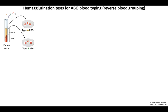Let's jump right into learning about some new tests today, starting with something called a hemagglutination assay, which is used for ABO blood typing. This is a type of serological test, or one where you measure qualities of soluble factors present in a blood sample.